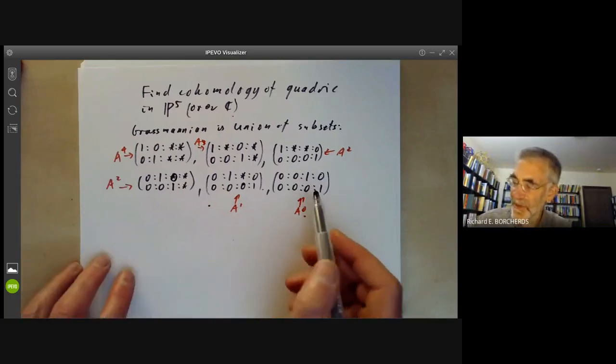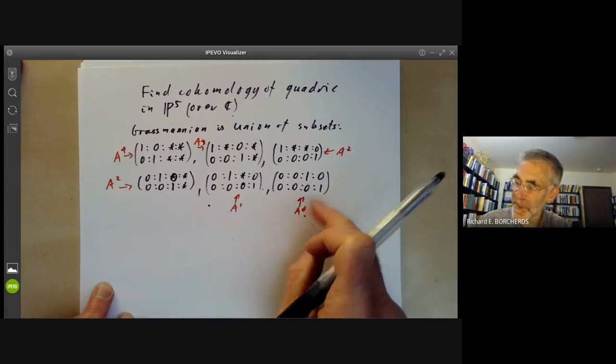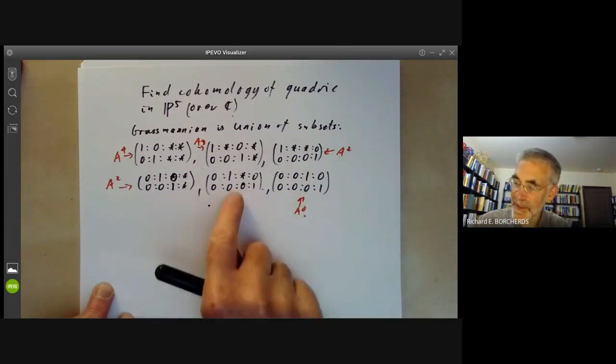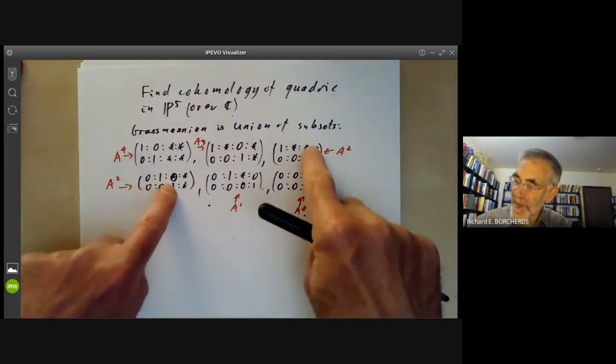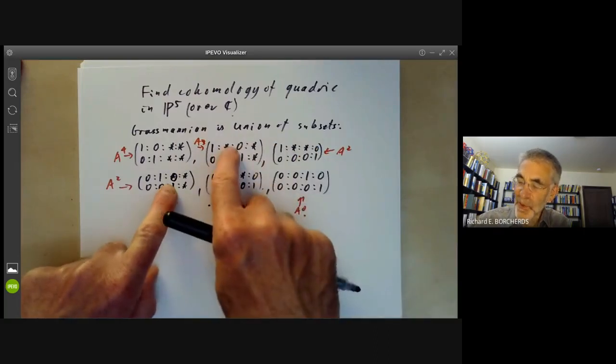And you can see that these form six copies of various little affine spaces so here we've got a copy of affine space A4, here we've got A3, here we've got A2, here we've got A2, here we've got A1 and here we've got A0. And this gives us a very nice cellular decomposition of the Grassmannian. So over the complex numbers if you go to an algebraic topology course you can see the dimensions of the cohomology groups coming right off from this. So the 0th cohomology group is dimension 1, the second is dimension 1, the fourth is dimension 2 because there are two of these, the sixth is dimension 1 and the eighth.